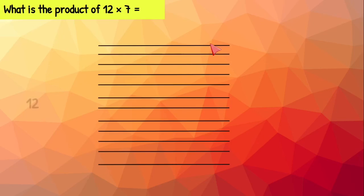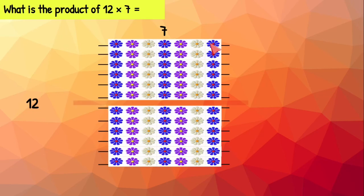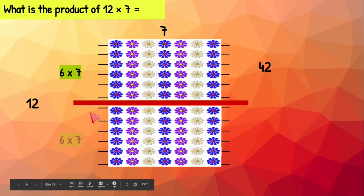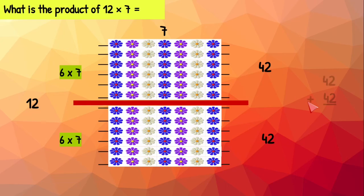12 times seven means 12 rows with seven flowers on each row. Let's go ahead and cut our array into two smaller arrays. On the top we have six rows with seven flowers on each row, which is 42. On our bottom array we have six rows with seven flowers on each row again, which gives us 42. 42 plus 42 equals 84. 12 times 7 equals 84.